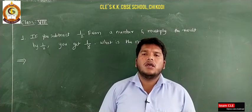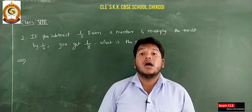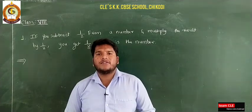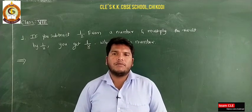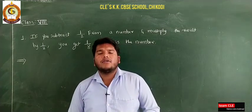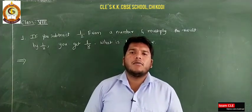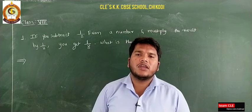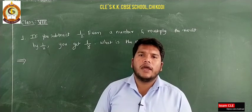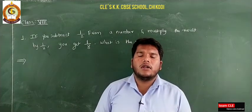In exercise 2.1, we solved some examples using the transpose method. You also solved some examples and submitted them. You also learned some applications of linear equations in one variable — the perimeter problem, consecutive numbers, and some more examples.